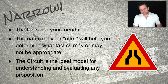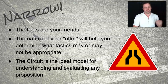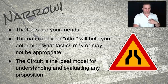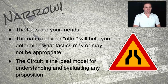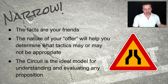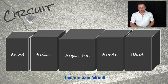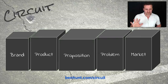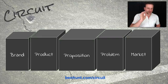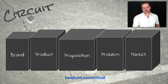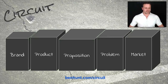And the circuit, which we're going to run through, is the best model I've ever come across for understanding or evaluating any marketing proposition. In fact, it goes way beyond marketing as well. So here's the circuit — five elements. Starting from the left: the brand. That's you — who is doing the selling, who are we buying from?